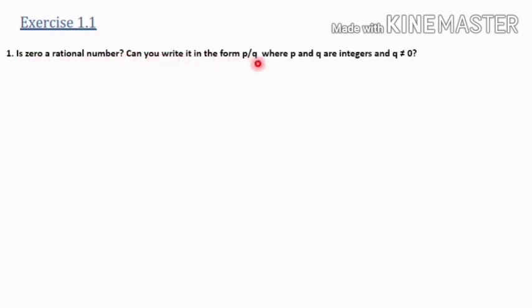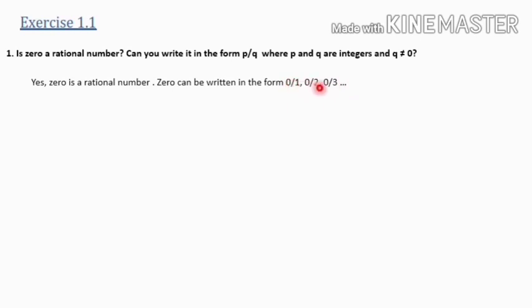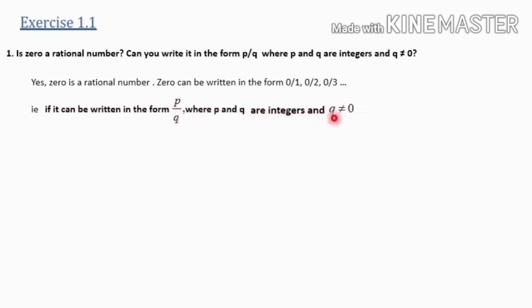Exercise 1.1, Question 1: Is 0 a rational number? Can you write it in the form p/q, where p and q are integers and q is not equal to 0? The answer is yes — 0 is a rational number. 0 can be written as 0/1, 0/2, 0/3, etc. Any number divided into 0 gives 0 only. So 0/1, 0/2, 0/3 — all these are in p/q format where p and q are integers and q is not equal to 0. Therefore, 0 is a rational number.